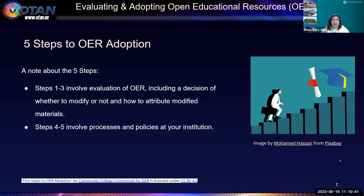A note about the five steps: steps one through three involve evaluation of OER, including a decision of whether to modify or not, and how to attribute the modified materials. Steps four and five involve processes and policies at your institution. Every institution has their policies and the way they want their students' learning materials to be distributed, so you want to take a look at that as we go over those steps.